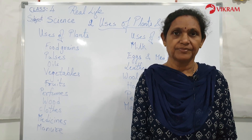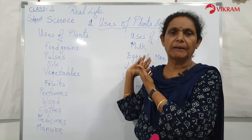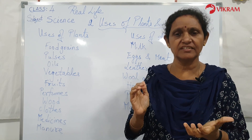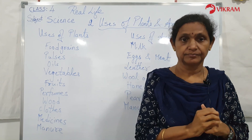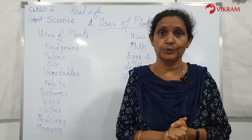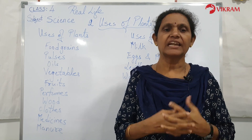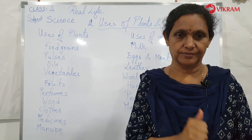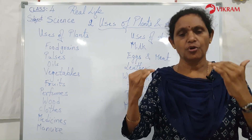Summary: All animals and human beings depend on green plants for their food. We get food, oils, wood, perfume, and medicine from plants. Fruits and vegetables contain vitamins and minerals. Dhanvantri, Nagarjuna, and Charaka were famous ancient experts in Ayurveda. Plants give us oxygen while preparing their food. We get leather from the hides of some animals, and pearls from oysters. Plants and animals are our natural resources.